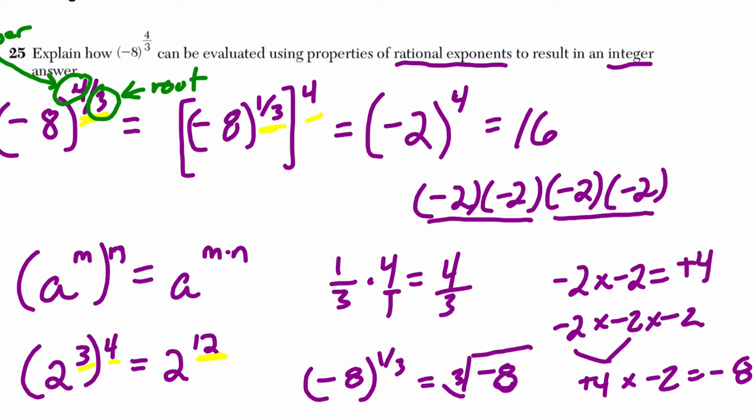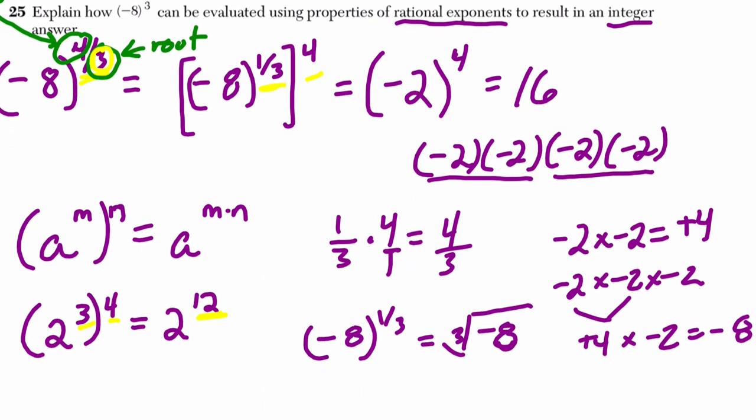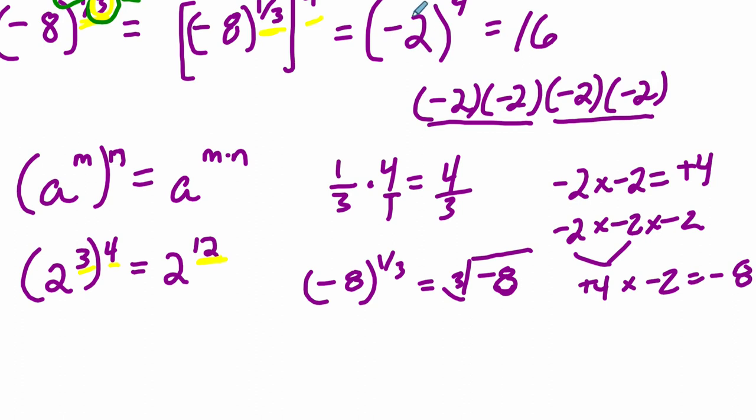So what's the general strategy? You have a base to a power. Try to take the root first. Then apply the power up. You want to take the root first generally to scale your number down. So negative 8 scaled down to negative 2. And then that powered up by 4 to 16.